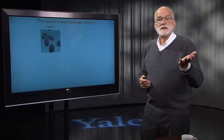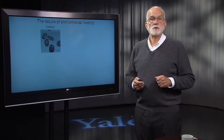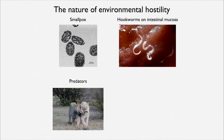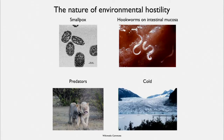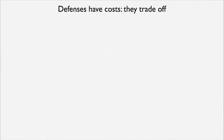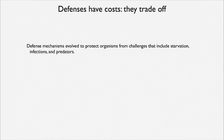To illustrate this, here are some elements of a hostile environment: the smallpox pathogen, hookworms on intestinal mucosa, predators. I have seen lions hunting in Mikumi National Park from a Land Rover — they were about 20 meters away, and they were extremely threatening. I could hardly see them slipping through the grass; if I had been out of the car, I would have been dinner. And then there are hostile physical environmental factors, things like cold. All of these lead to the evolution of defense mechanisms, and those mechanisms have costs — they're trading off with something. The mechanisms that evolve to protect organisms include defenses against starvation, infections, and predators.